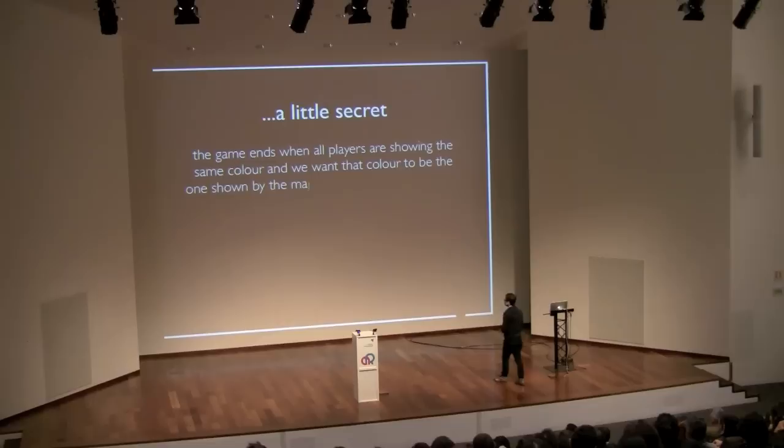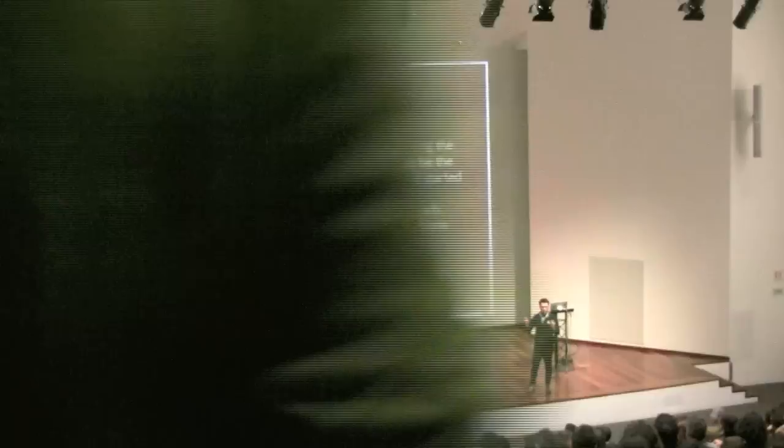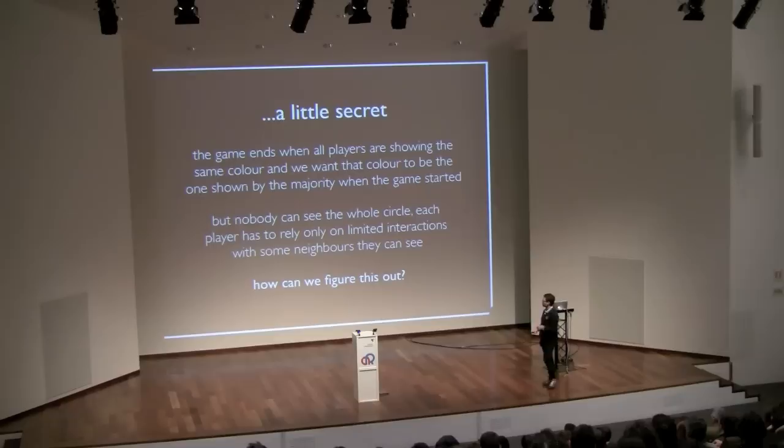The goal of this game is that by taking turns and looking at the neighbors, every child in the game ends up showing the same kind of card, the same color. And we want that color to correspond to whatever was in the majority at the beginning of the game. Because they can only rely on what some neighbors are doing, we need to figure out how to actually tell them what to do.